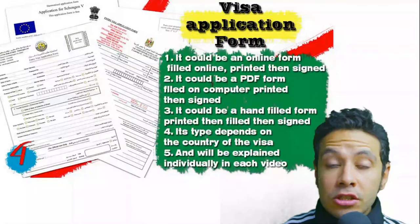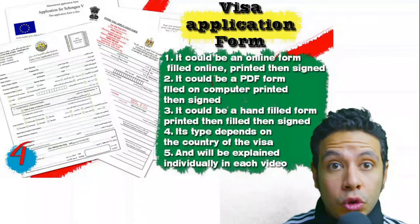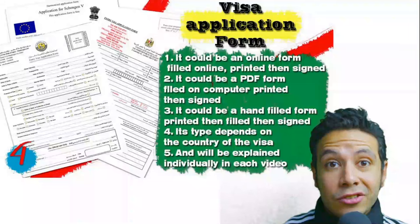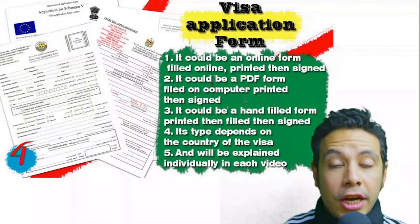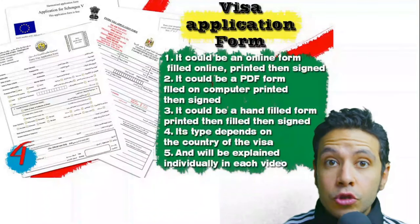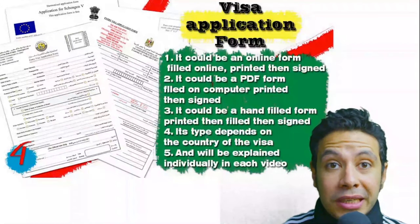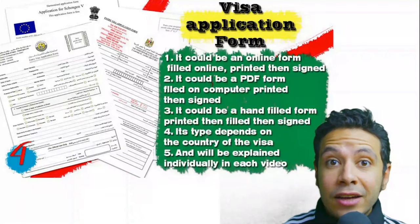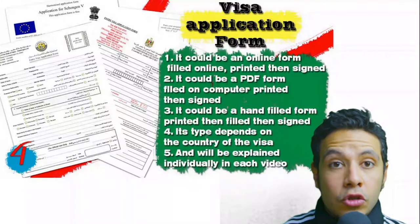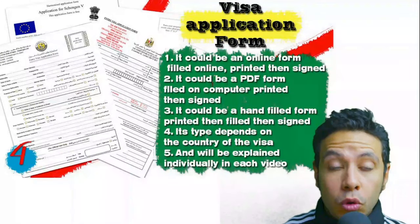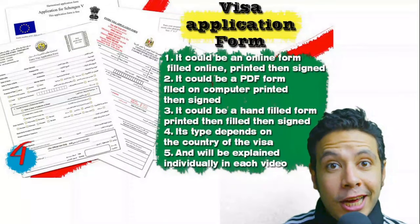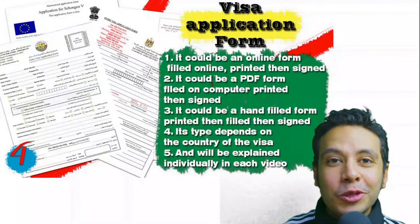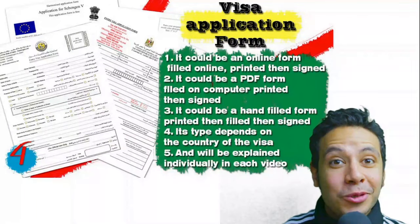For the visa application form, in general you need only one copy, though sometimes two or three are required. Visa forms differ from country to country. Generally you print and fill the form manually, but many countries now offer online platforms where you can fill the form online, then print and sign it — as shown earlier in this video.